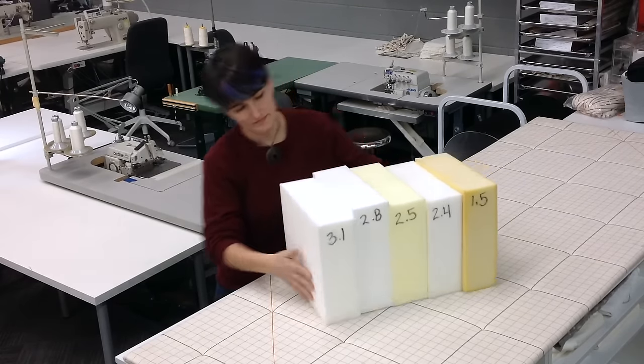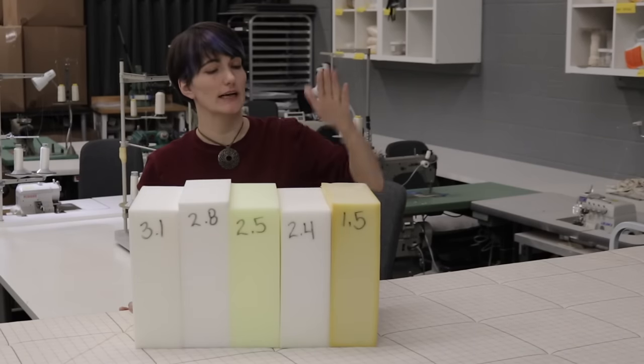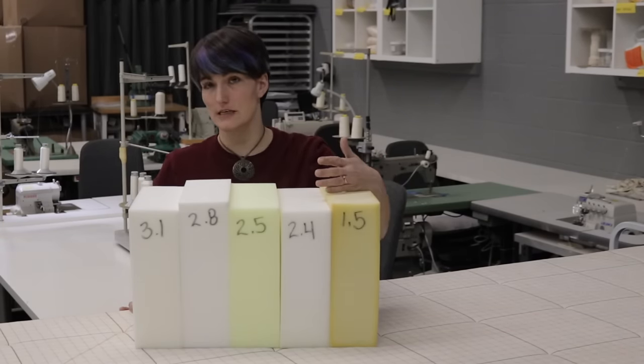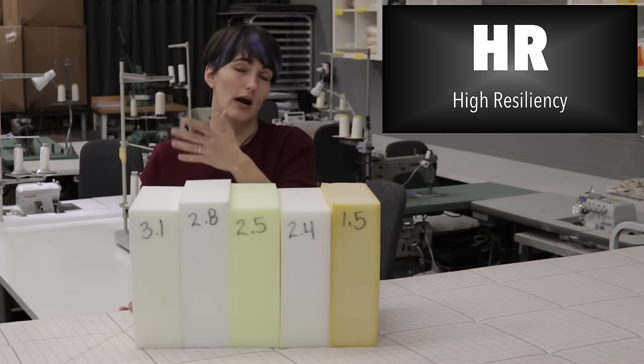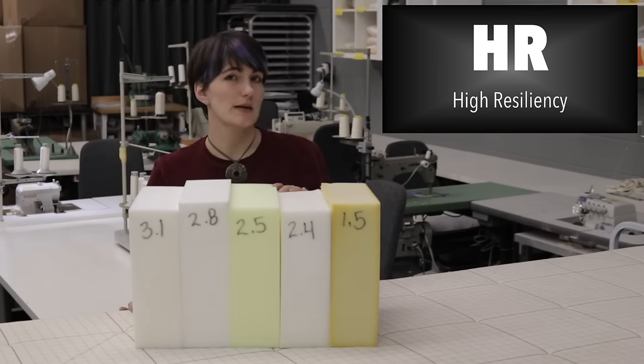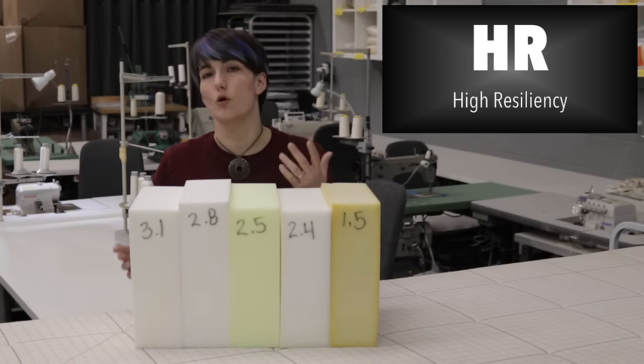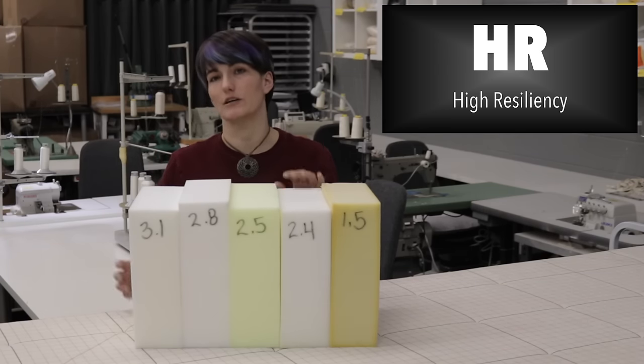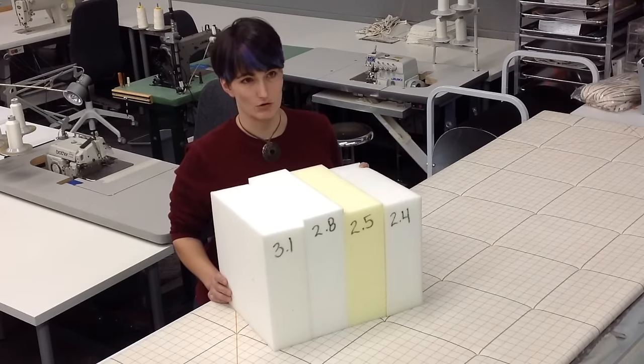One last thing to be aware of, there's actually a foam up here I wouldn't use for upholstery at all, and that's this guy down here. Not because of the density or the IFD, but because these four are HR, or high resiliency foams, which means they use better chemicals and have a different cell structure more appropriate to the longevity and the handling that we want for upholstery. So this one doesn't even make my order list.